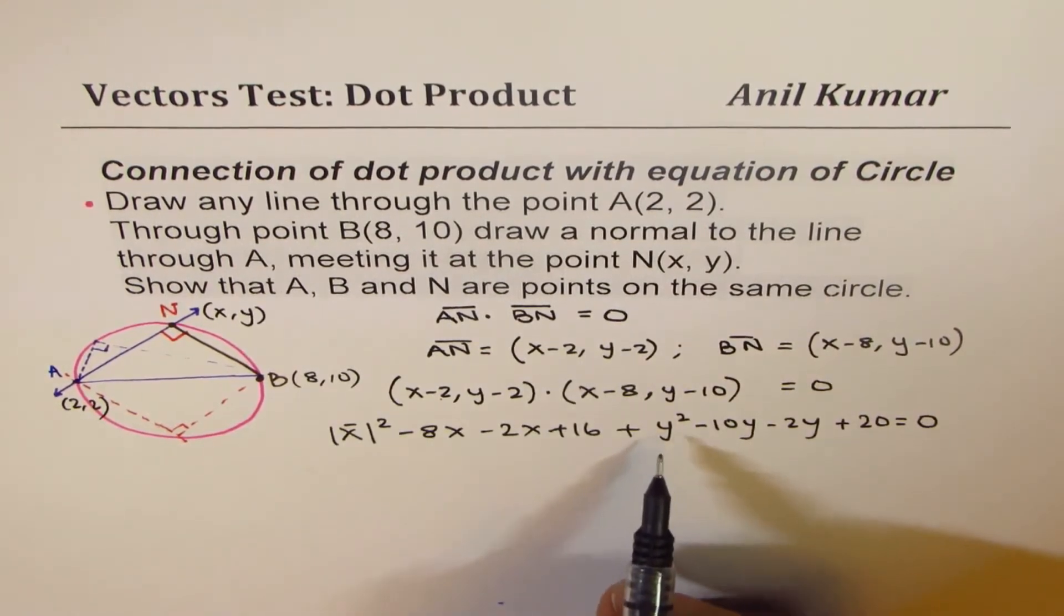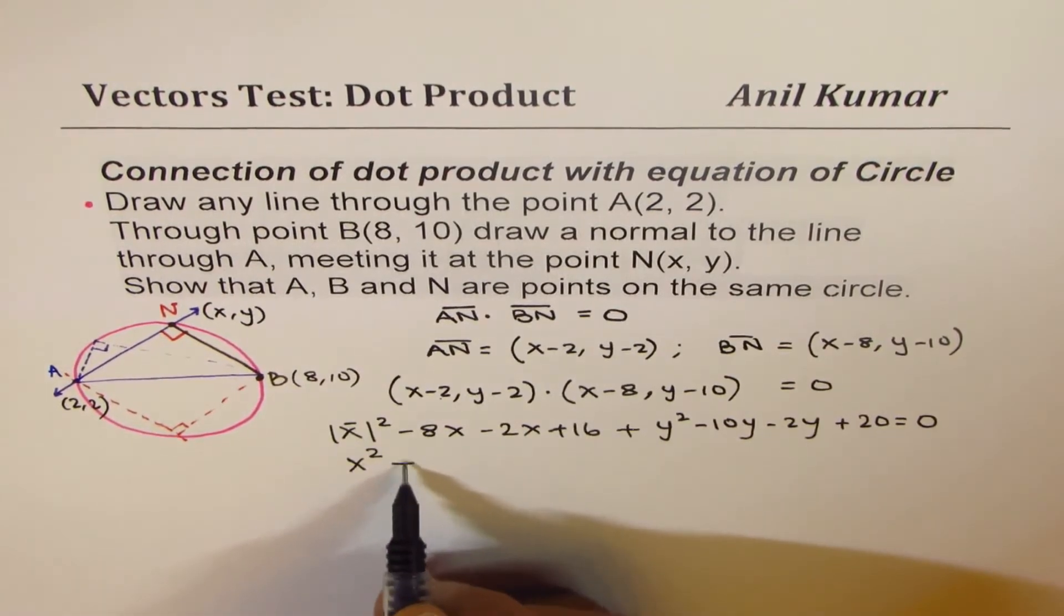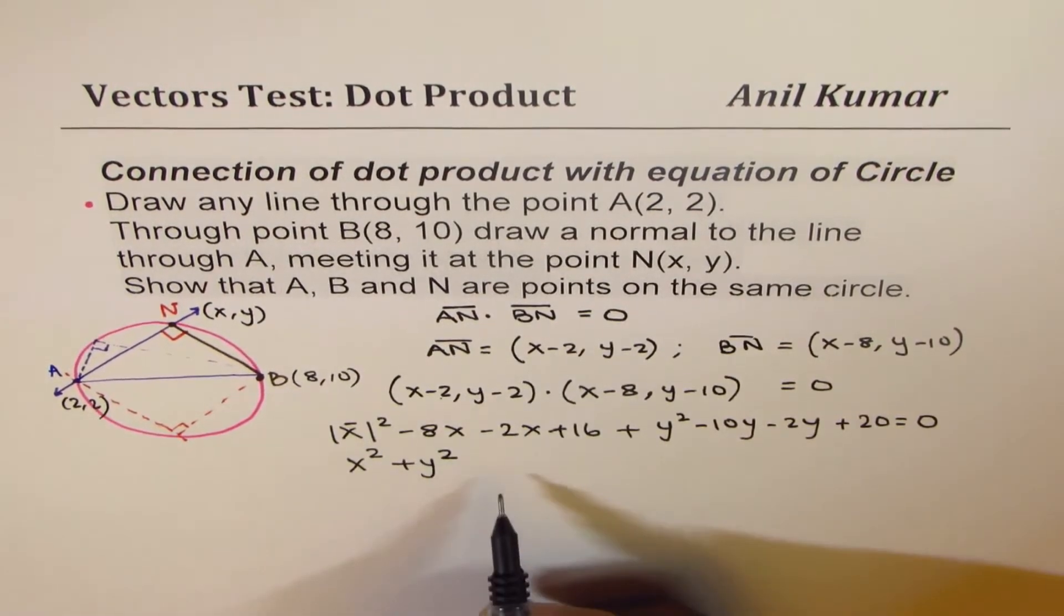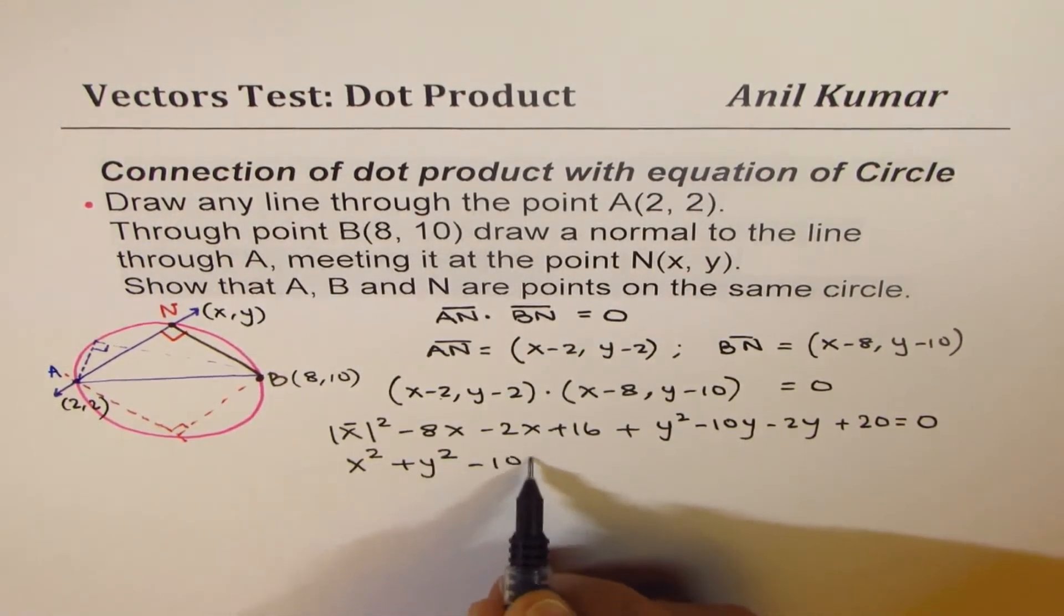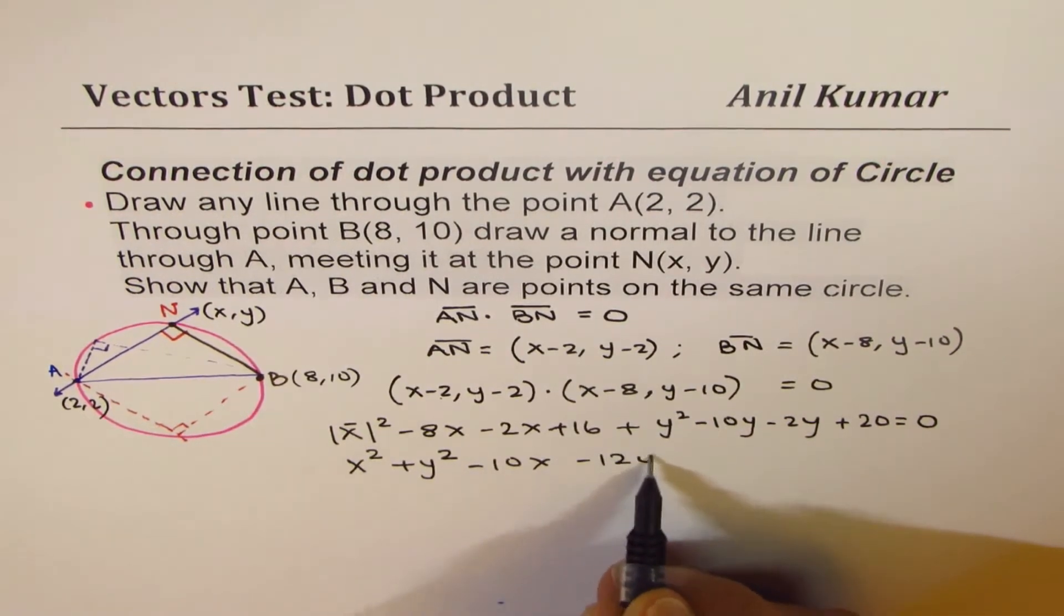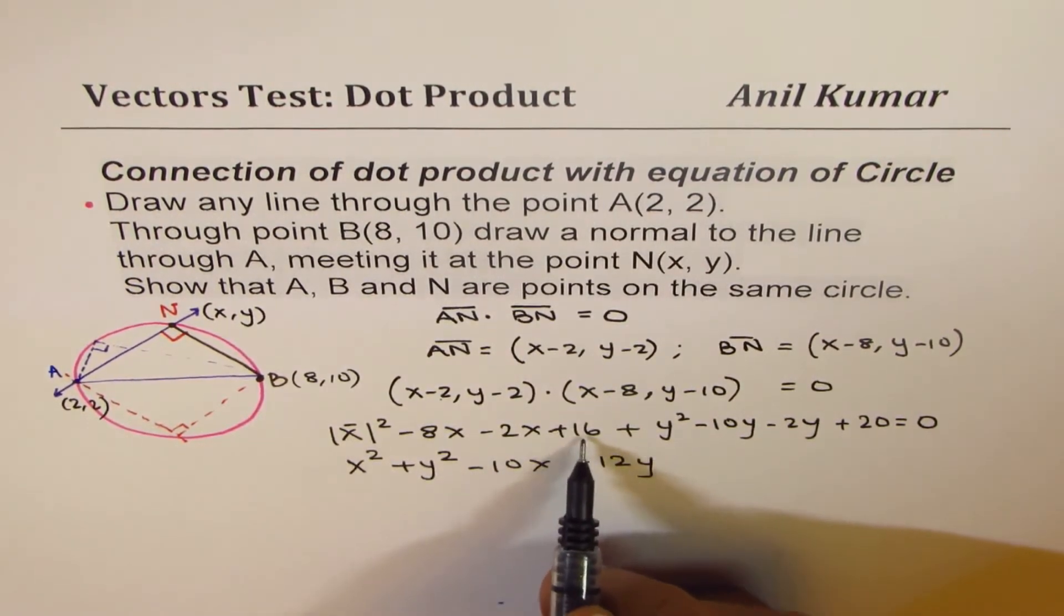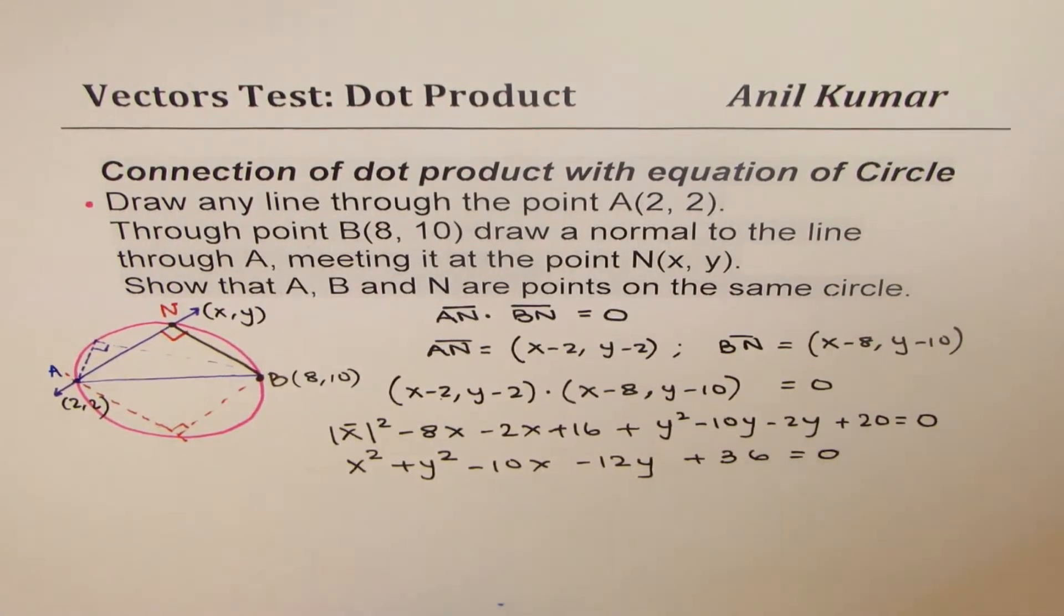Now you could simplify this, rearrange. So we get X squared plus Y squared. And X terms, if you add them up, you get minus 10X. Y terms, if you add them up, minus 12Y. The constants, 16 and 20, makes it 36, equals to 0.